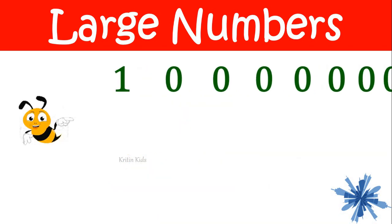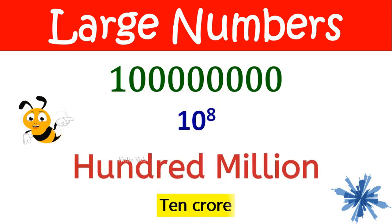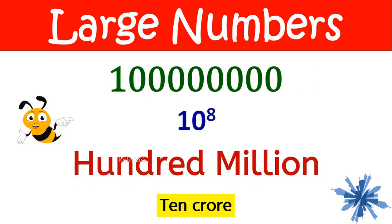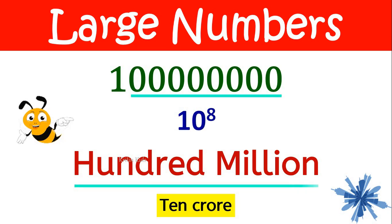If you add one more zero, it becomes hundred million. This is also called as ten crore. One followed by eight zeros is hundred million.